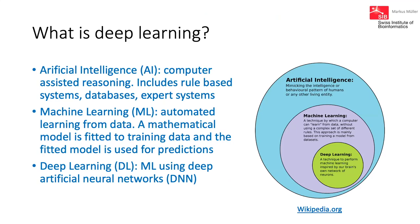To start with a little terminology: we talk about artificial intelligence, which is basically everything where you use a computer to support reasoning. A part of artificial intelligence is machine learning, where you use data to train a classifier or model in a more or less automatic way. Deep learning is a part of machine learning where you do that with deep neural networks, so the model is restricted to this neural network architecture.